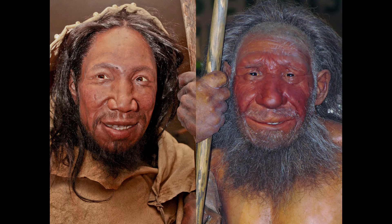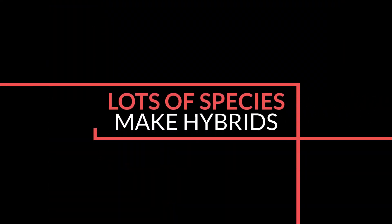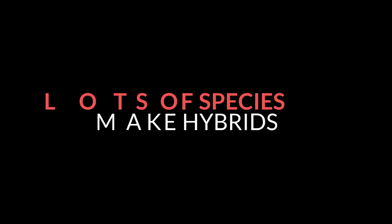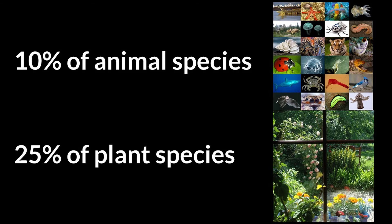Lest you think it's just humans and humanoid aliens in Star Trek, a recent review estimated that at least 10% of animal species on Earth and 25% of plant species sometimes hybridize with another species. So Star Trek wasn't so far out with all that alien interbreeding. What are your thoughts on species in Star Trek and the amount of interbreeding that seems to happen between them? Let us know in the comments, and thank you for tuning into Biotrekkie Explains. See you next time.